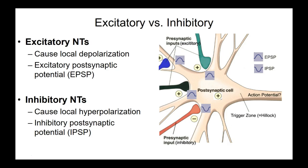With excitatory neurotransmitters, we're making the inside of the cell less negative by adding positive ions — specifically sodium ions from outside the cell come in. This causes depolarization, bringing the membrane potential closer and closer to threshold until an action potential is generated.